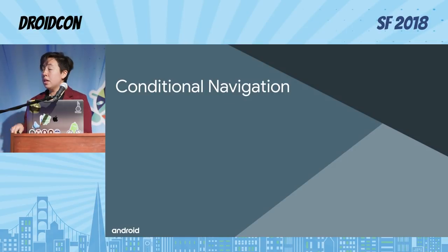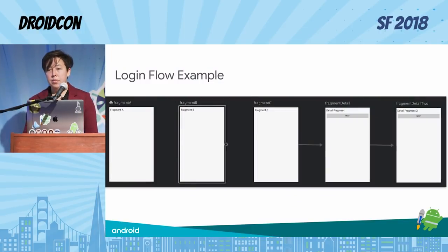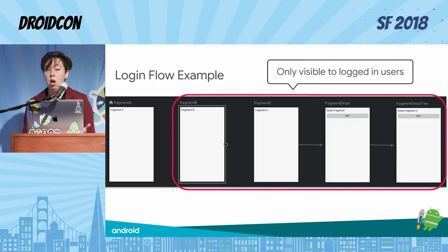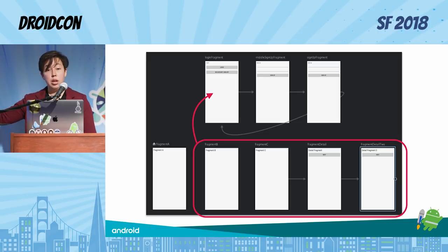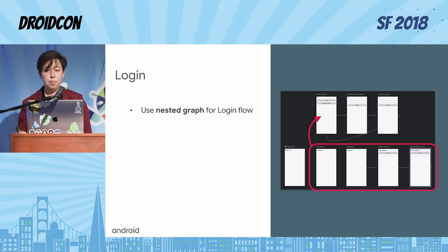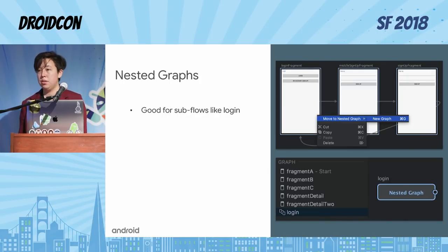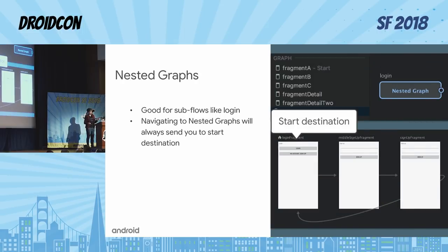Now I'm going to dive into a slightly more complicated example. Let's say I have a bunch of screens, and for some of them I don't want you to be able to look at them unless you're logged in. For this subsection of screens, I want to say: if you go onto any of these screens and you're not logged in or you become not logged in, I'll redirect you to this login flow. To implement this, the first thing I'd suggest looking into are nested graphs. Nested graphs are super easy to make — you just select all the screens in your login flow, right-click, and click new graph, and it visually moves them to a new graph. Note that nested graphs have their own start destination.